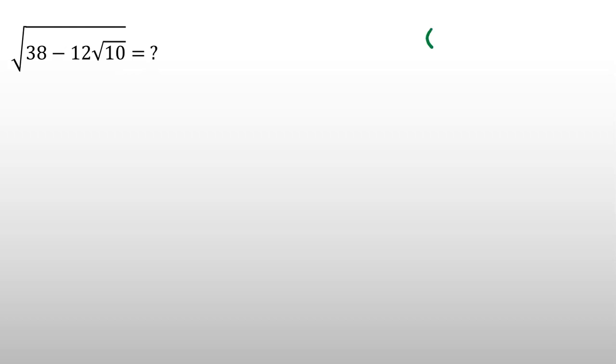If I want to solve this, I should know this identity, famous identity: a squared minus 2ab plus b squared. I want to write it, I guess. It is a minus b root 10.